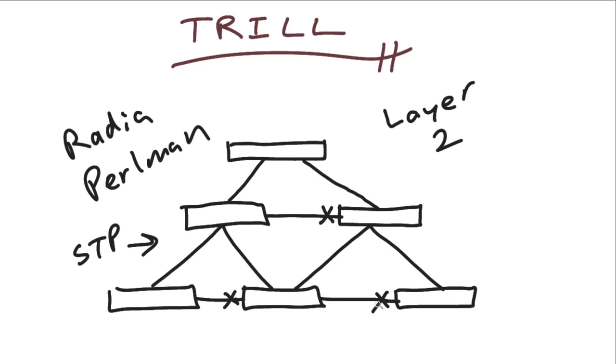But Spanning Tree Protocol does have its issues. I mean, this is bandwidth that we are paying for and it is useless—it's blocked in this particular topology. So we have today Rapid Spanning Tree Protocol and Multiple Spanning Tree Protocol. But even with those improvements, there are still scalability issues admittedly with Spanning Tree Protocol. After all, even in a Rapid Spanning Tree Protocol world, we're still going to be wasting bandwidth with links that are in a blocking state.